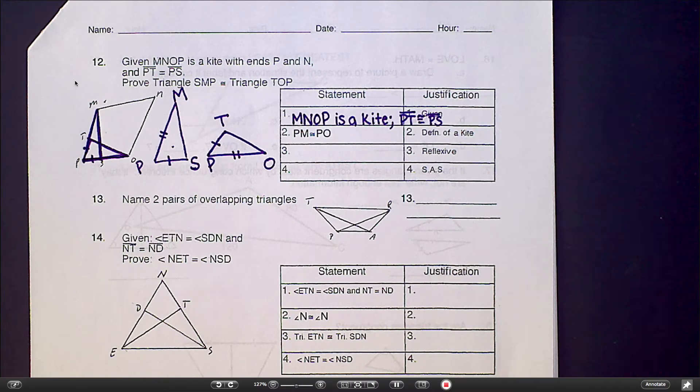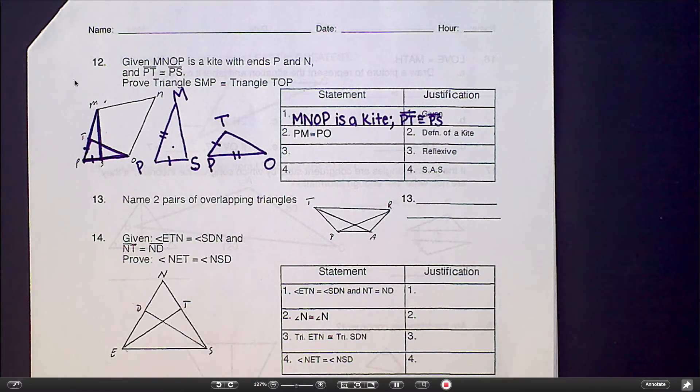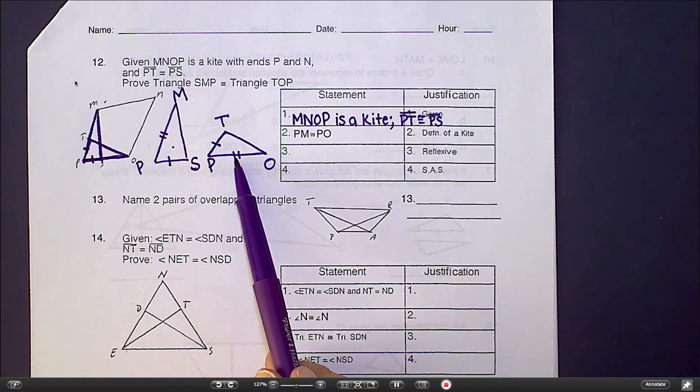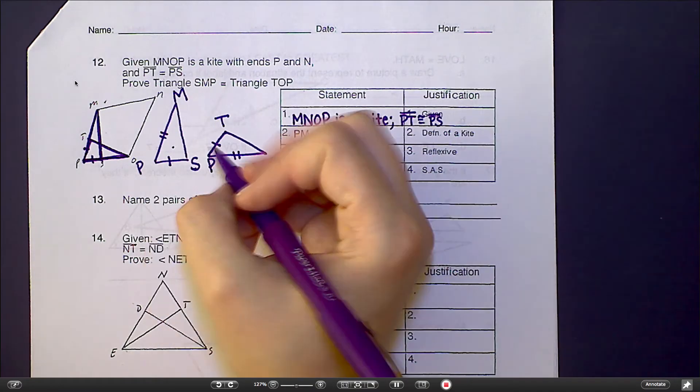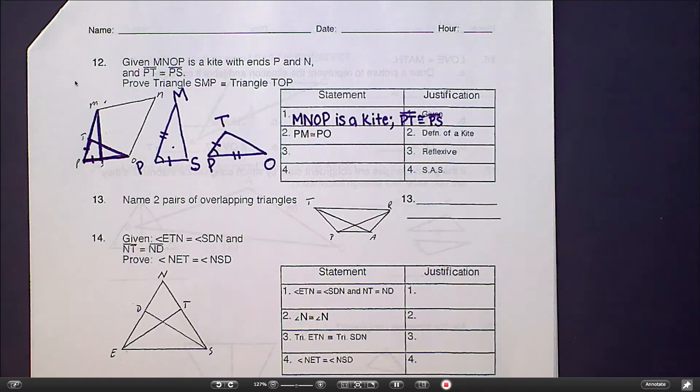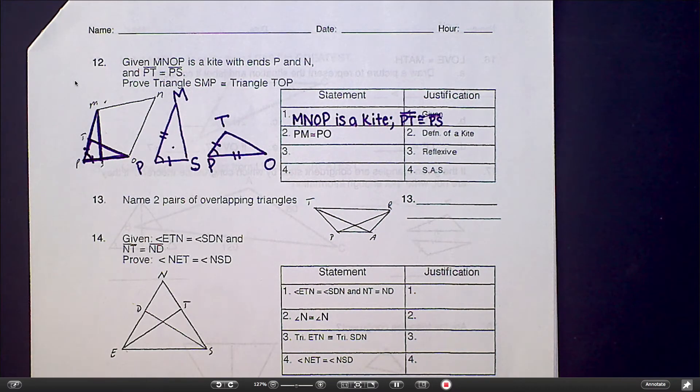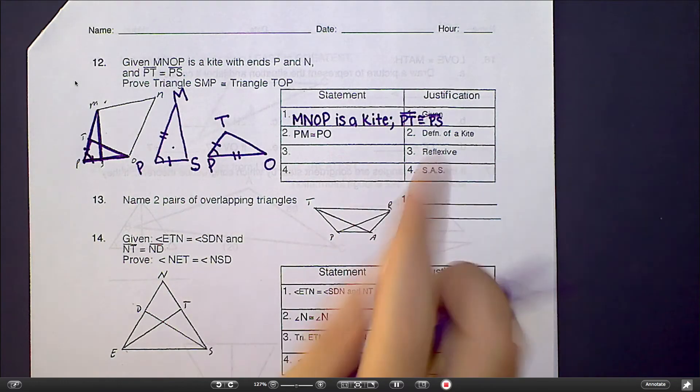Now would be a great time to step back and look at what we're trying to prove. We're trying to prove that these two triangles are congruent to one another. So this is where we want to start thinking about our triangle congruence theorems. I know I'm going to be using SAS to show that they're congruent. I have two sides here and two sides here. All I really need is the angle that's in between them. They share this angle right here, angle P. So we need to think about how could we say that angle P is congruent to angle P. That's really just saying that angle P is congruent to itself, which is the reflexive property.